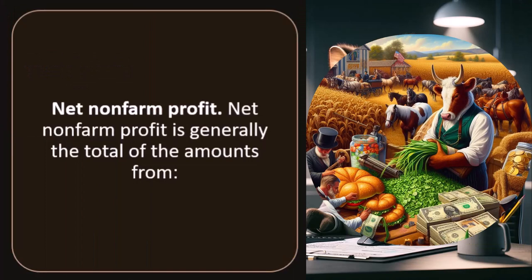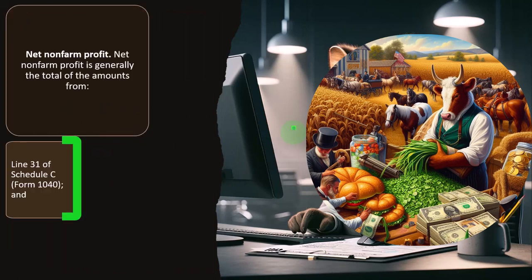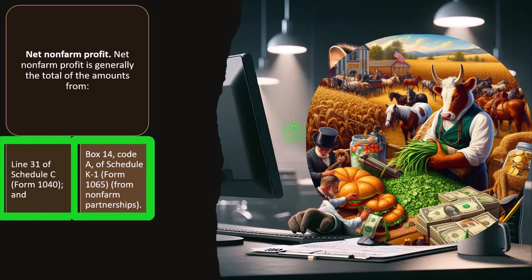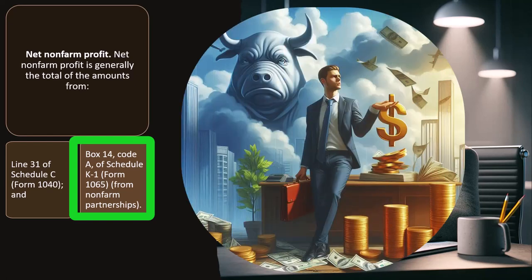Net non-farm profit is generally the total of the amounts from line 31 of Schedule C on Form 1040, and Box 14, Code A of Schedule K-1, Form 1065. In other words, if you have a partnership situation, the partnership income might be treated similarly to a sole proprietorship, flowing through with the use of the K-1 and then being subject to self-employment tax.